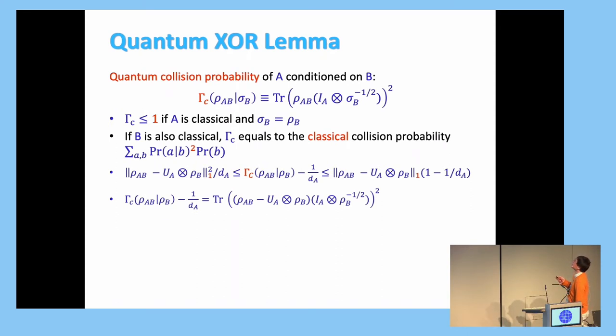So this is a quantum collision probability. The formula looks quite complicated. But the case we use is where A is the classical register and sigma_B is just rho_B. So in that case, this is more manageable and you can prove that the conditional probability gamma_C is actually less than one. So you feel more comfortable calling it a probability. And as a sanity check, if you also put the B register as classical, then it'll reduce to the classical collision probability, so sum of probability squared.